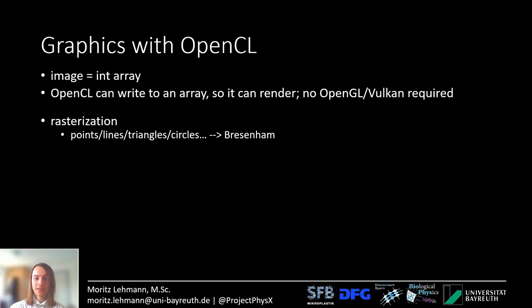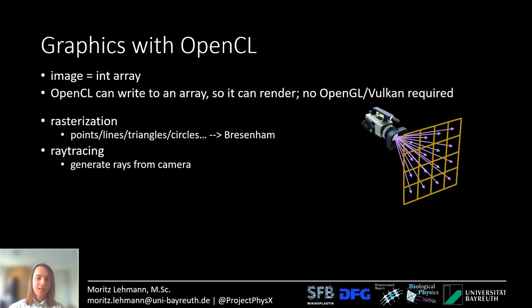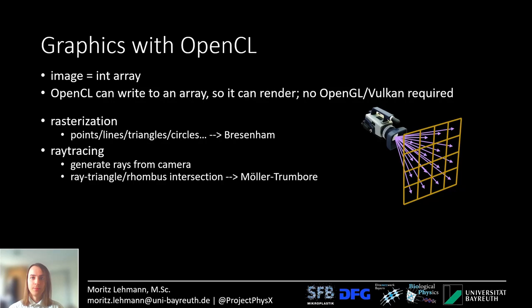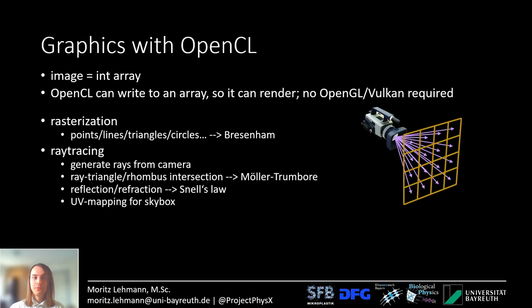For rasterization — points, lines, triangles, and circles — I use the Bresenham algorithm. For ray tracing it's a bit more complicated with a few more steps. First I generate rays from the camera, one ray per pixel. For ray-triangle and ray-rhombus intersections I use the Möller-Trumbore algorithm. For reflection and refraction there's Snell's law, and the skybox color is computed with UV mapping.